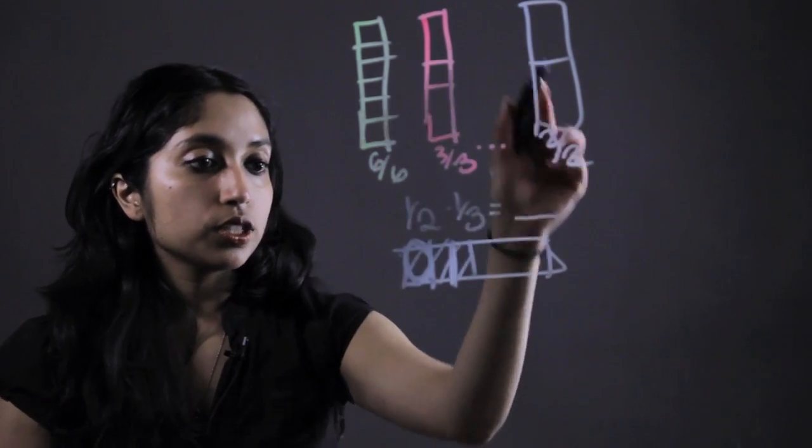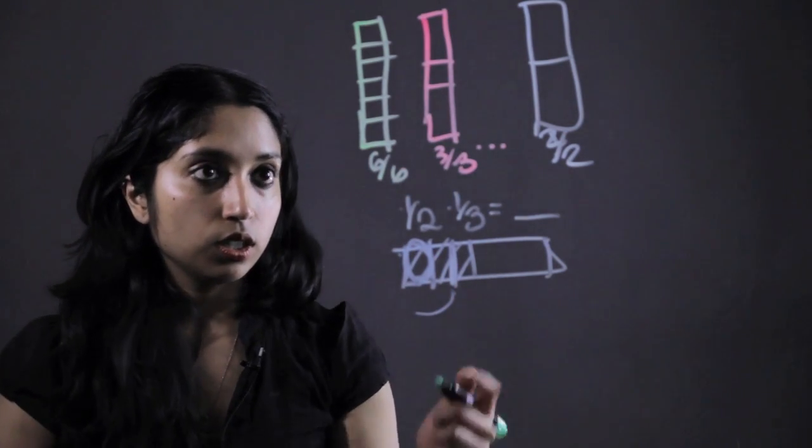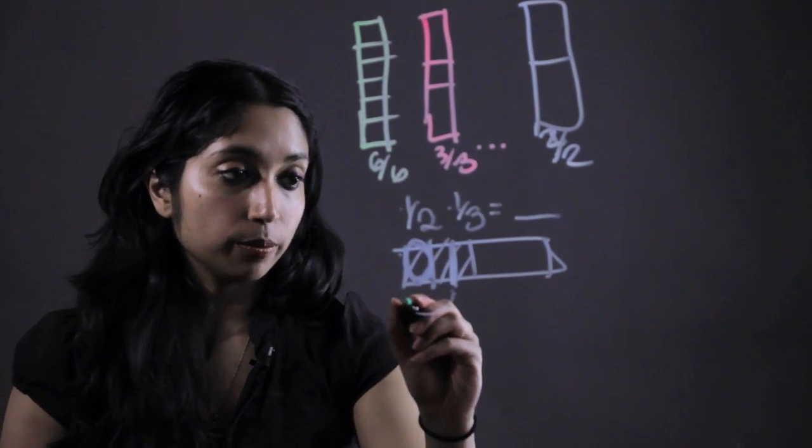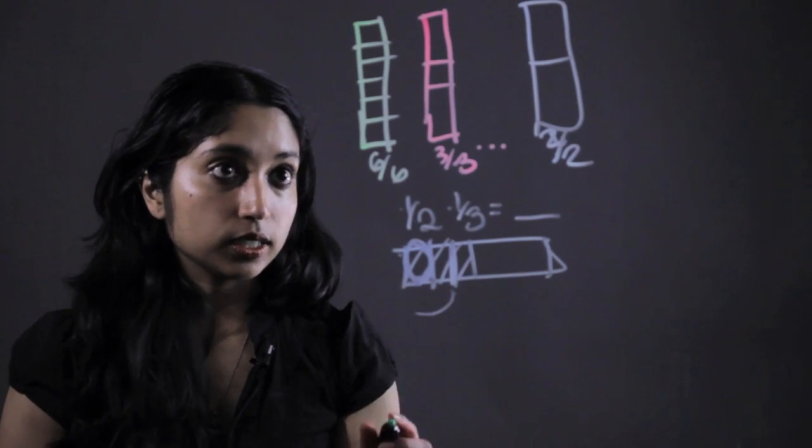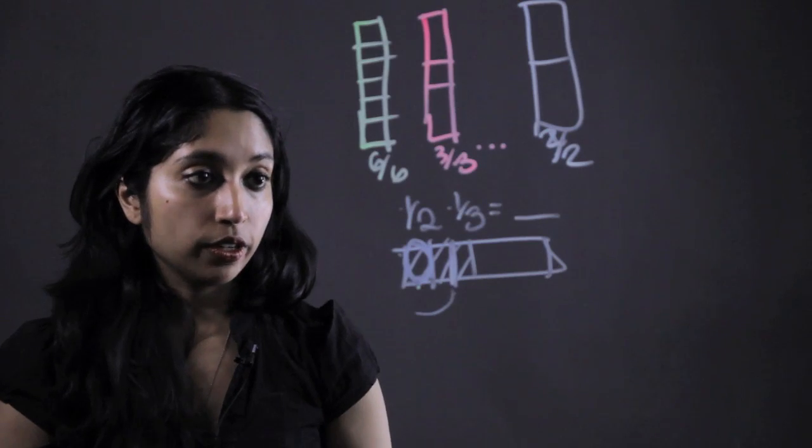Then we would just take our different strips and start lining them up to see which one matched. So in this case, if you lined them up, it would be 6/6. One of these green squares would be equal to this little portion in here.